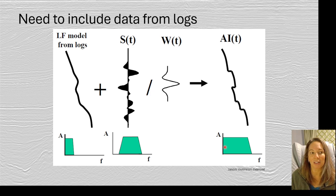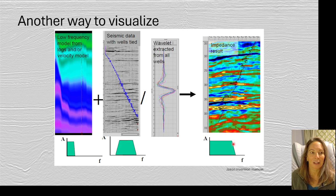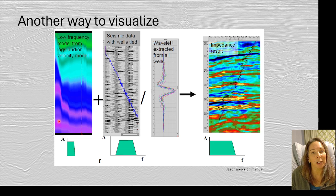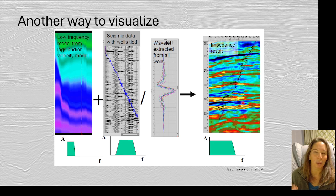Luckily, we're able to get the low frequency from our well logs. If we have a general trend of the acoustic impedance from wells drilled in our seismic area, we can add that into the seismic and flush out those lower frequencies. So now we can go from the reflection coefficients all the way back to the acoustic impedance. We can take that low-frequency model from well logs or from velocity models, combine it with the seismic data where the wells are tied — that gives us the wavelet — then we divide the seismic by the wavelet and end up with the acoustic impedance result.